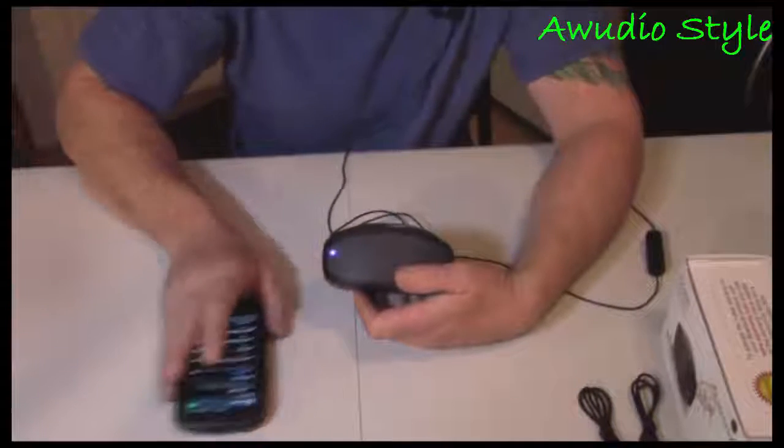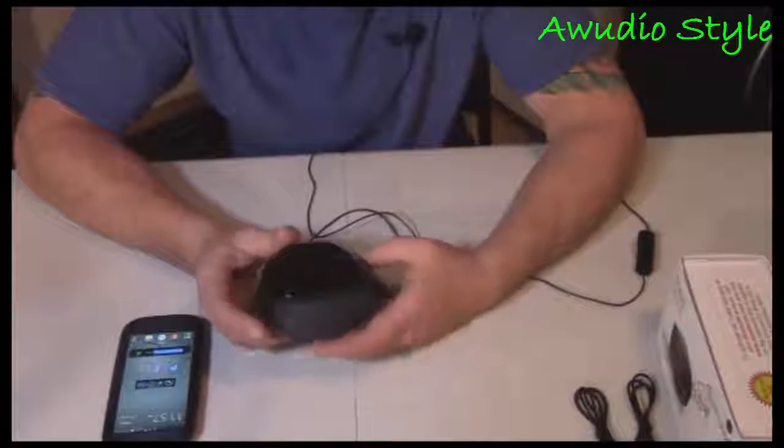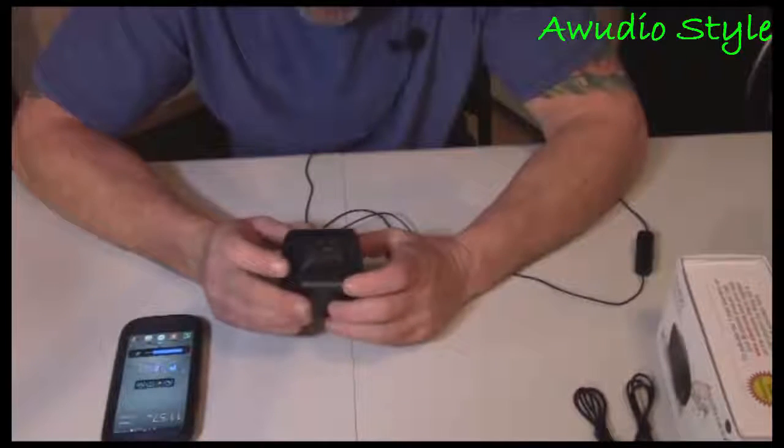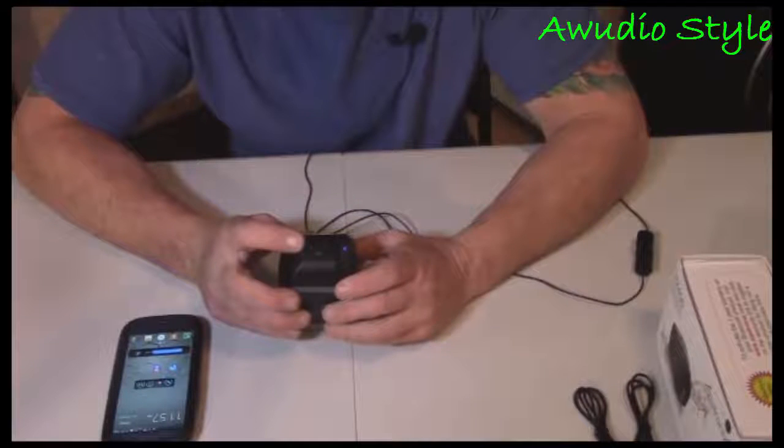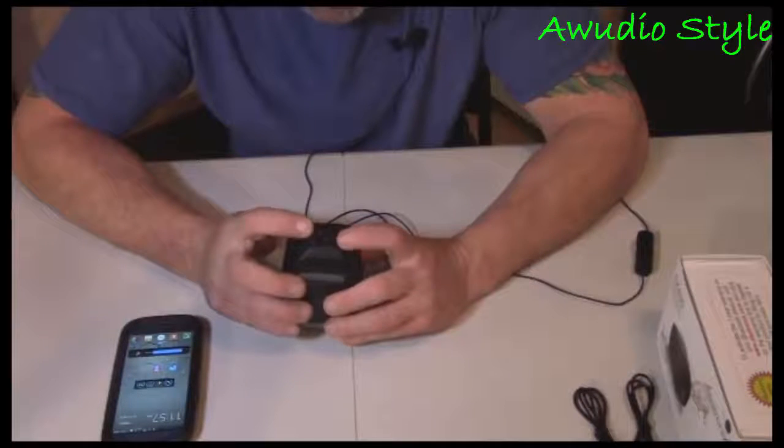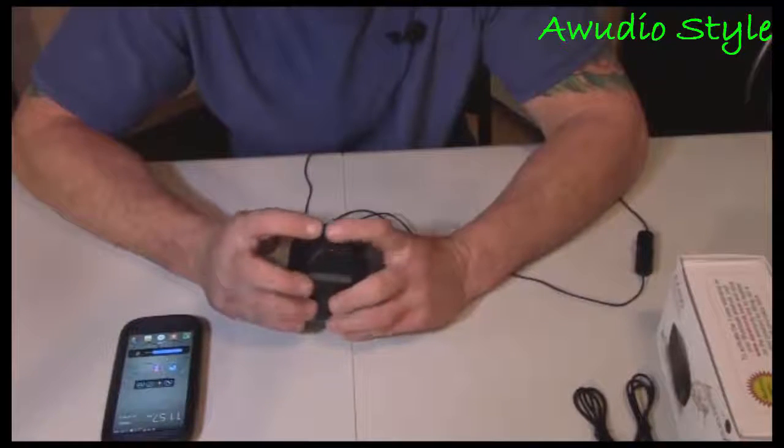That noise right there let us know that it is Bluetooth connected. Now before I go through the music, I want to show you the buttons on the side right here. You're going to have your volume up track forward, your volume down track back, and of course your play pause button right here at the bottom, just two small buttons.